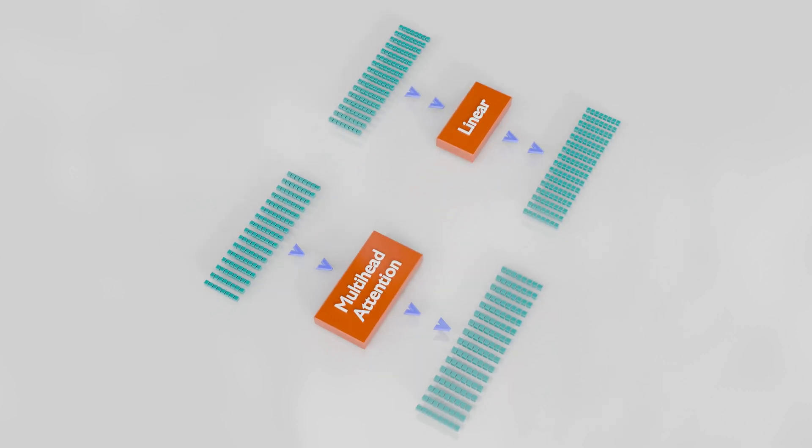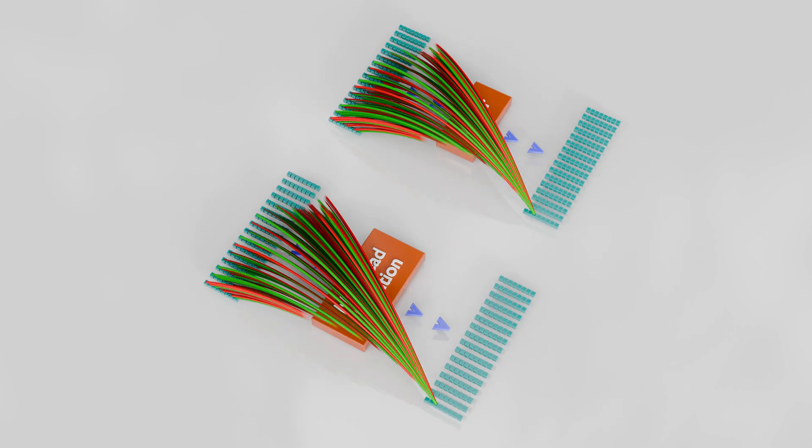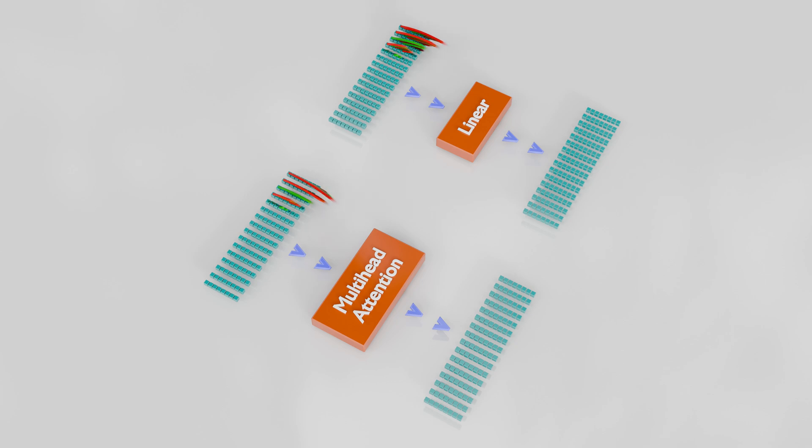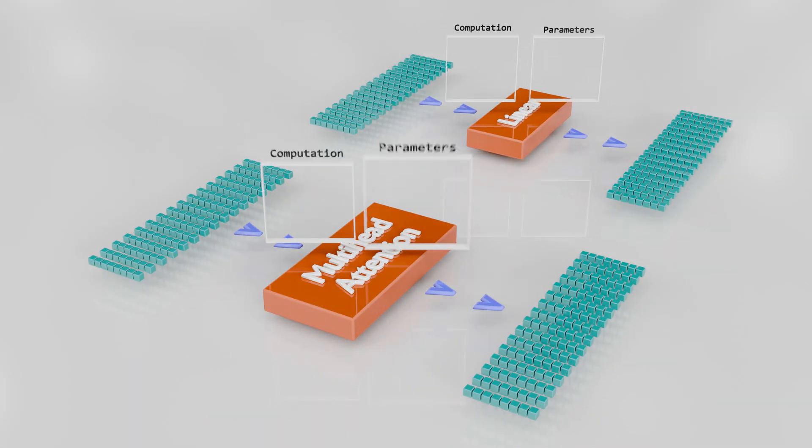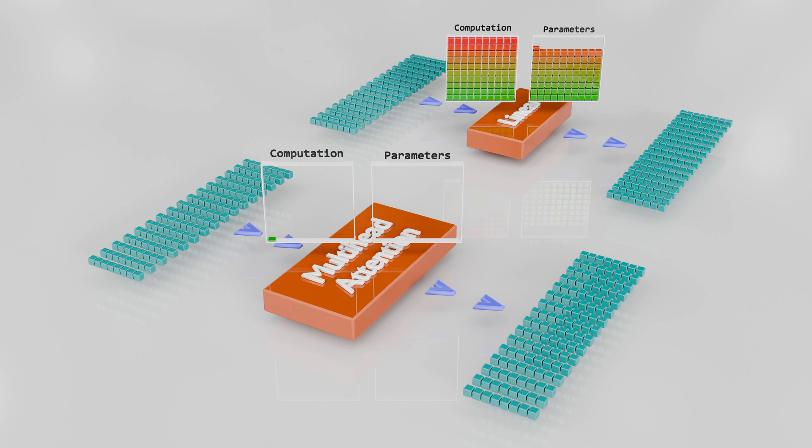In the last video, I said that the multi-head attention layer was just like the linear layer and that each output depended on the value of every input, but that it did this with dramatically less computation and parameters.